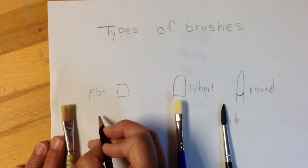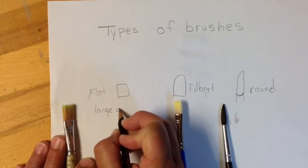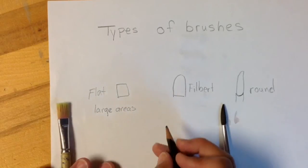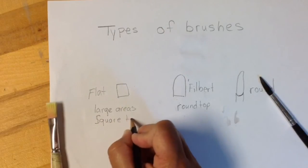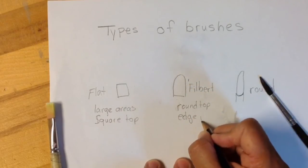And then underneath that, or beside that, write that flat brush is for large areas and has a square top. The filbert brush has a round top and is for edge painting.